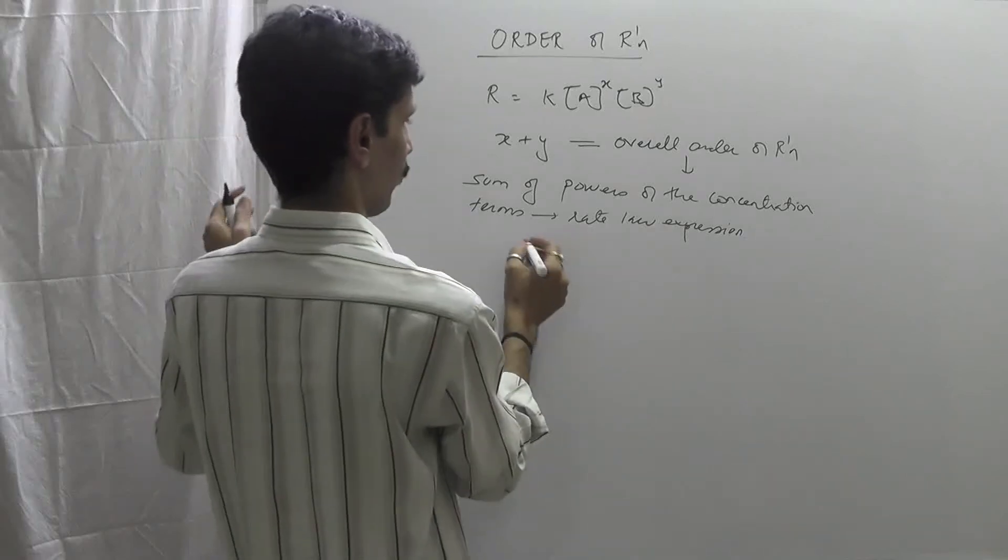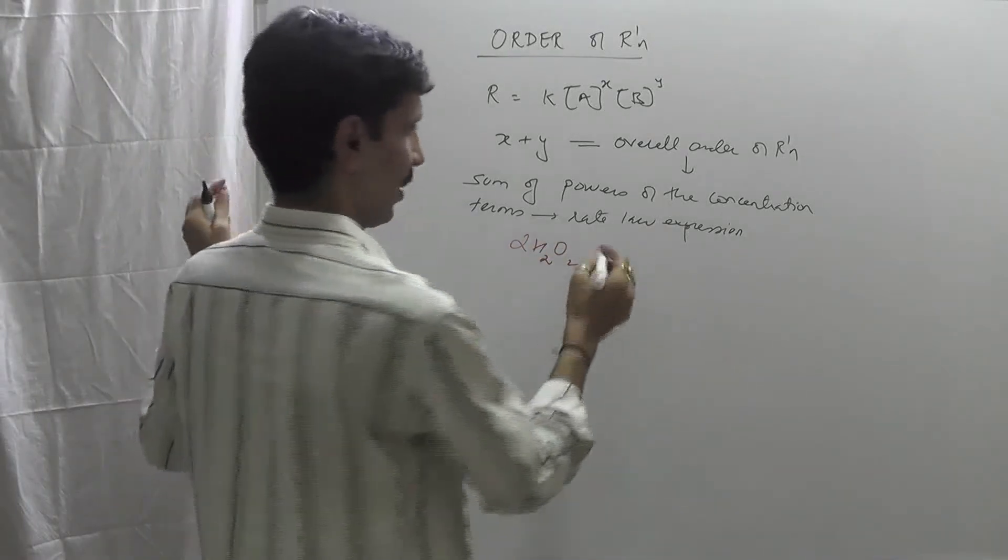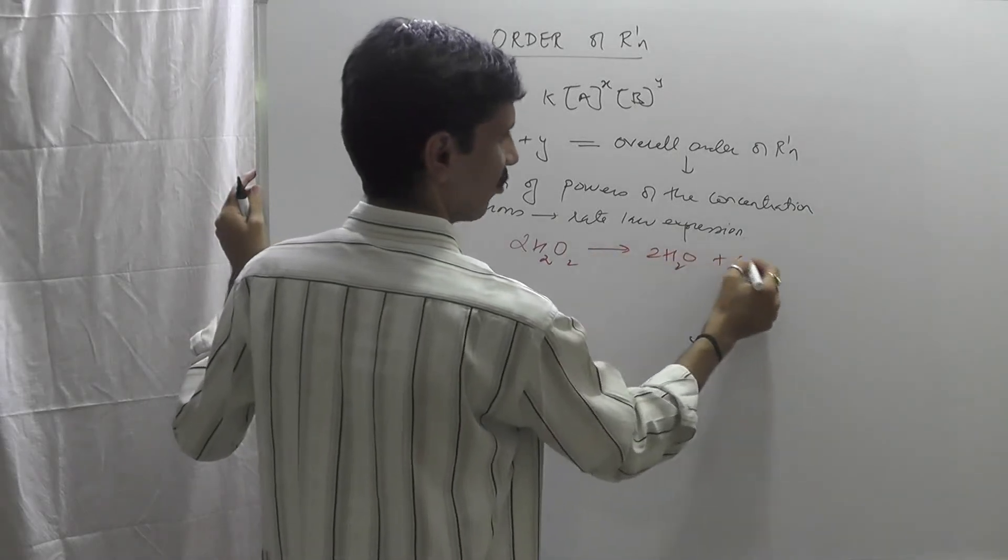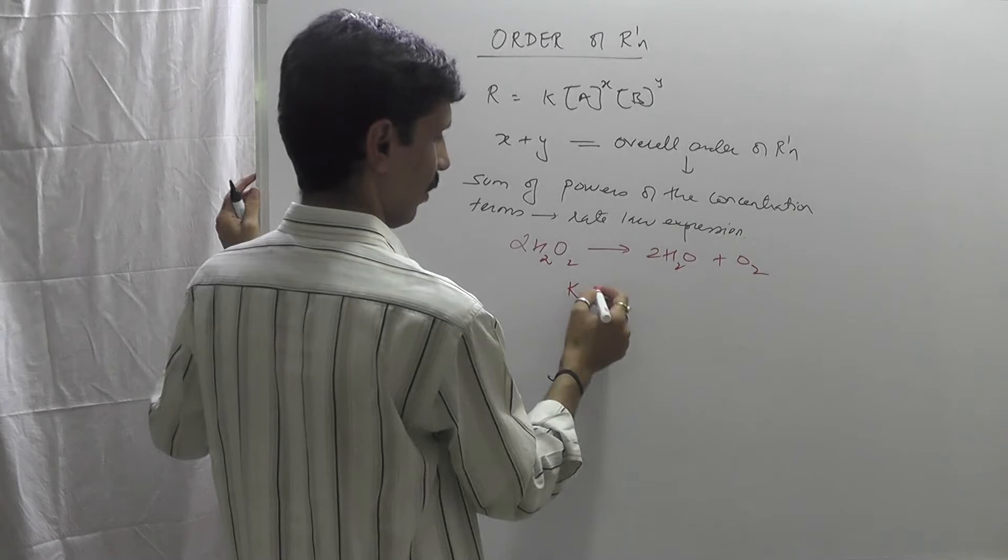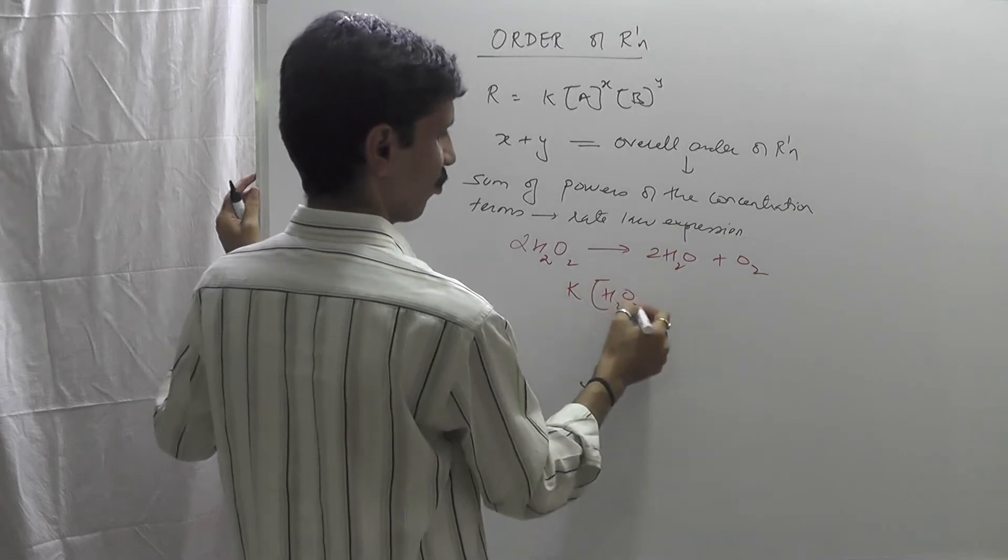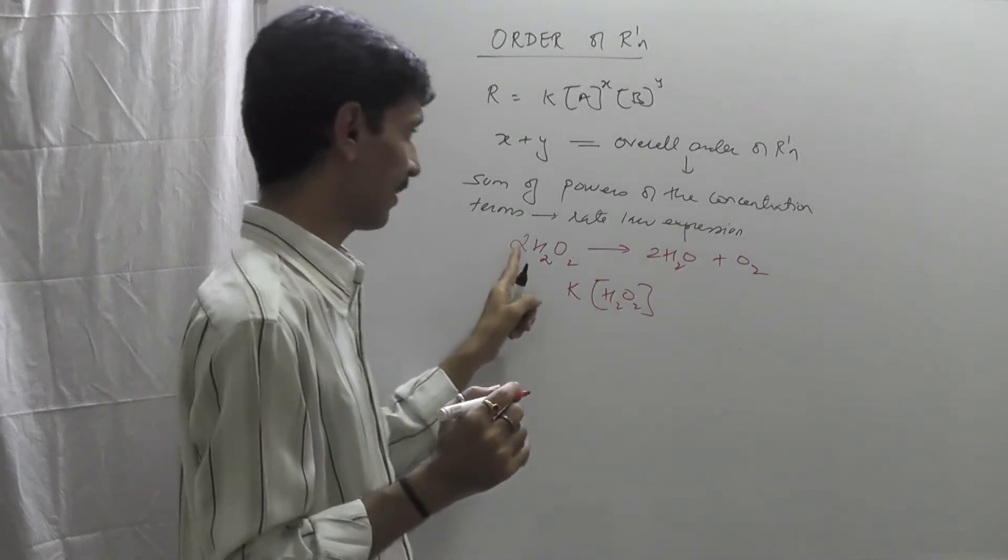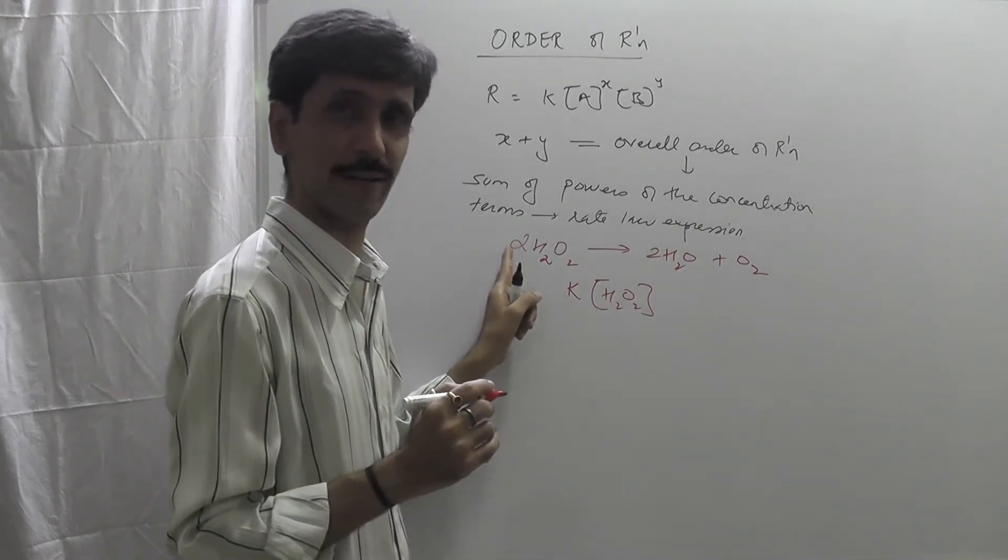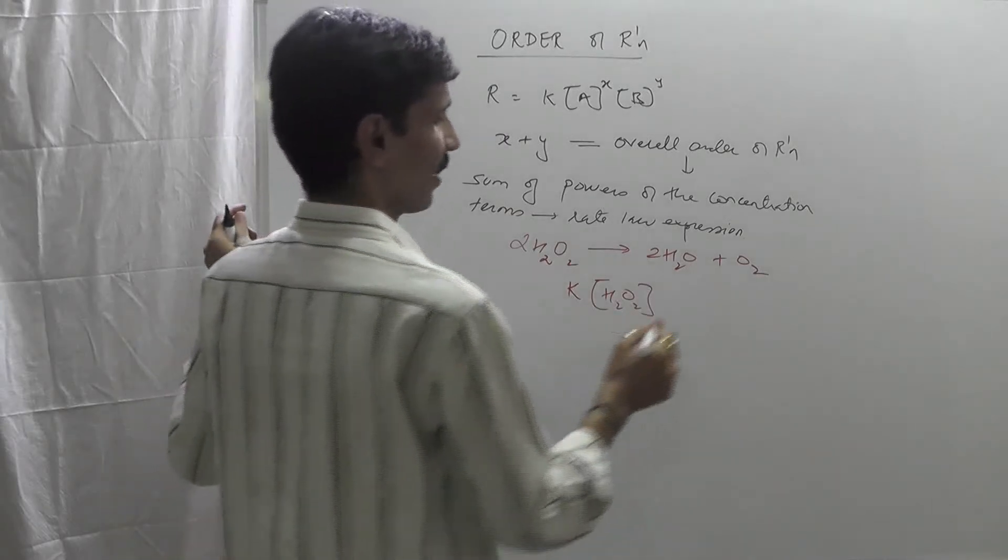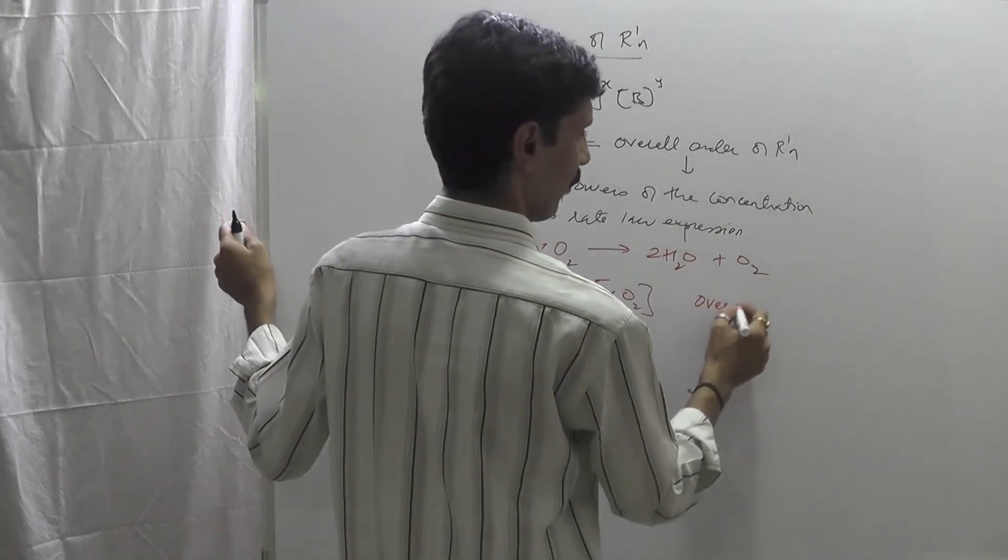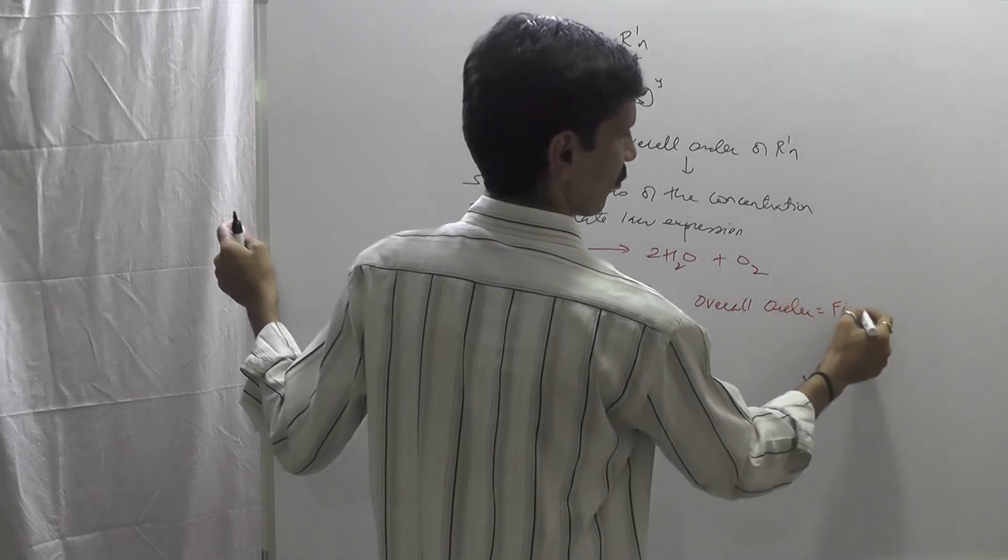I will give you some examples. Let us consider the reaction of decomposition of hydrogen peroxide H2O2. We will get 2H2O plus O2. If I am going to write this rate law expression, that means R will be equal to K[H2O2]. This is nothing but the coefficient, a stoichiometric coefficient. And this is the rate law expression which is determined experimentally. So therefore, we say the overall order is first. So it is a first order reaction.